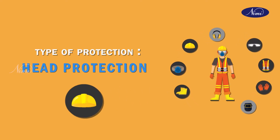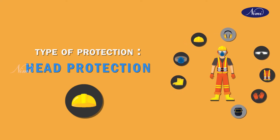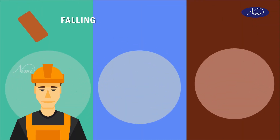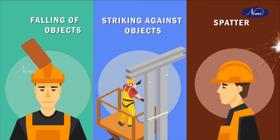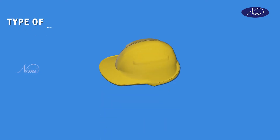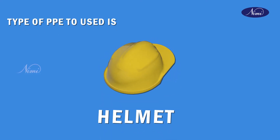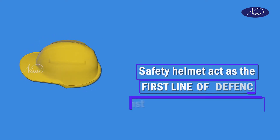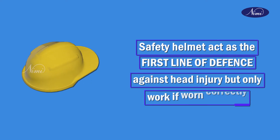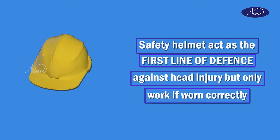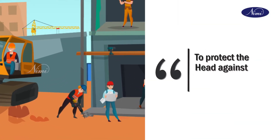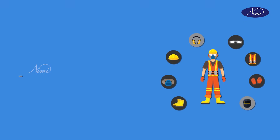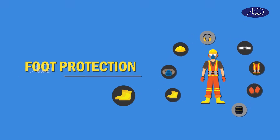Type of protection: head protection. The hazards can be falling objects from height, or striking against objects on the head or spatter. The type of PPE to be used is a helmet. Safety helmets act as the first line of defense against head injury, but they only work when worn correctly. Safety helmets are designed to protect the head against falling objects from height.